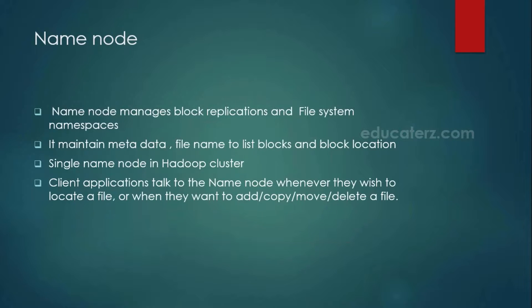Let's try to understand what exactly the name node does. This is a single point of contact — if anybody wants to contact your Hadoop cluster, the first and foremost point of contact is your name node. Even if you want to add any file to your HDFS, delete a file, move a file, copy a file, or any such activity, it first interacts with your name node. The name node will take a decision of where you want to store your files or where you want to retrieve your files, because your name node maintains very important information called metadata, consisting of all the block locations and what blocks are available and where exactly they are stored.